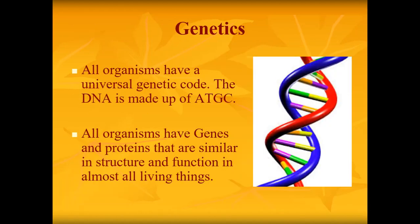Genetics is also a major factor in showing evidence that evolution has occurred. All organisms share the universal genetic code — DNA is made up of adenine, thymine, guanine, and cytosine (A, T, G, C). All organisms have genes and proteins that are similar in structure and function across almost all living things. This suggests that somewhere back in time, everything may share the same distant ancestors — which is why we think all living species on Earth are related in some way, shape, or form.